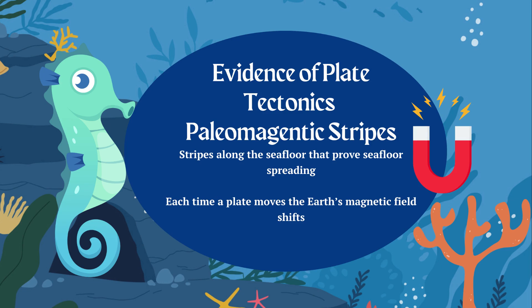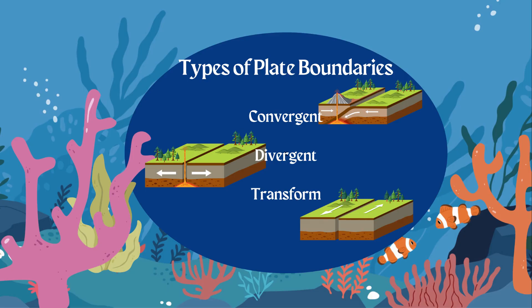The first thing to think about is the evidence of plate tectonics. The biggest piece of evidence you need to know is paleomagnetic stripes — striping along the seafloor that proves the plates move in certain directions. Every time the plates move, it changes the magnetic field on earth — think north and south pole shifting very slightly. That's the first piece of evidence.